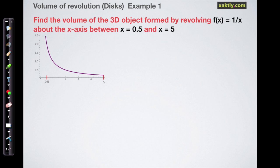So let's use the function f of x equals one over x and we'll revolve that around the x-axis between x equals 0.5 and x equals 5. So when we revolve that, it looks something like this and here's a nicer picture of that.